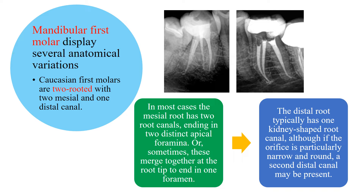Mandibular first molars display many anatomical variations. In Caucasian populations, first molars are usually two-rooted — one mesial root and one distal root. The mesial root typically has two mesial canals, and the distal root usually has a single distal canal. In many cases, the two mesial canals exit as two distinct apical foramina, but sometimes they merge into one single foramen.